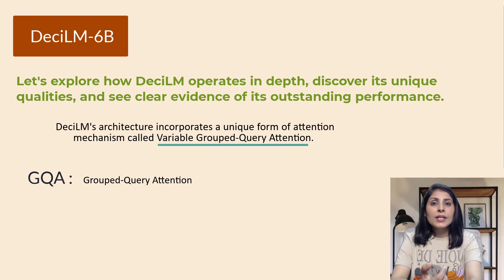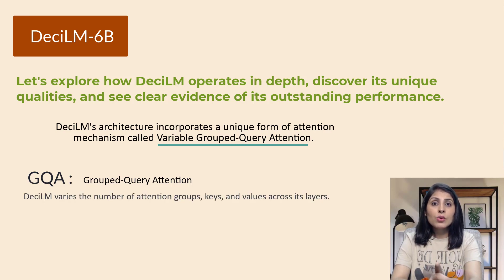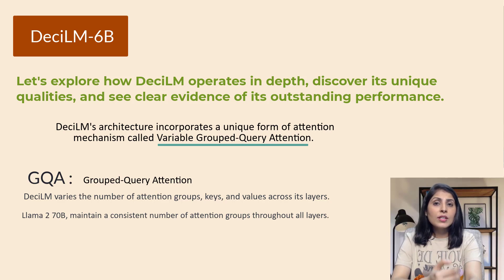DesiLM takes the concept of GQA further by introducing variability across the transformer layers. Unlike models like LLaMA2, which maintains a consistent number of attention groups throughout all layers, DesiLM varies the number of attention groups, keys, and values across the layers. Depending on what it's looking at, it might use four groups, two groups, or just one group for the attention work. This adaptability helps DesiLM be both fast and smart.